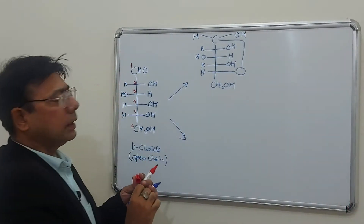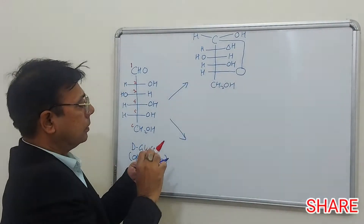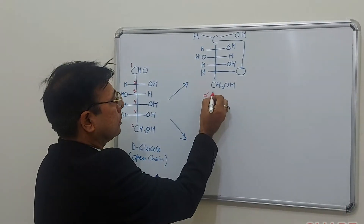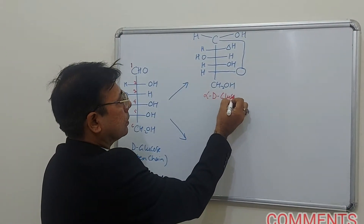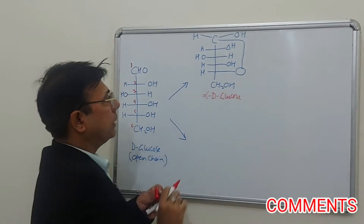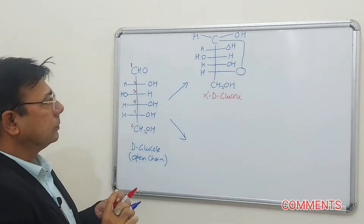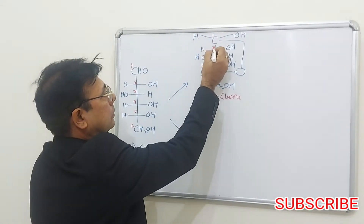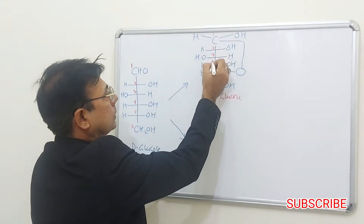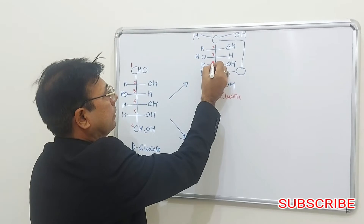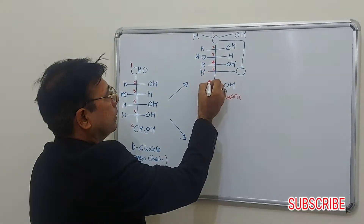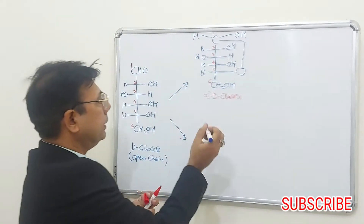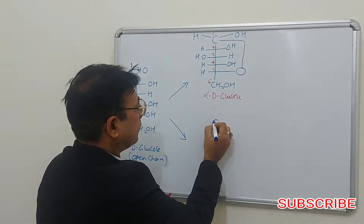It either forms this structure, which is alpha D-glucose, with carbons numbered 1, 2, 3, 4, 5, and 6. Alternatively, it forms the beta D-glucose structure.